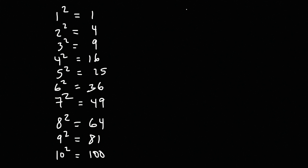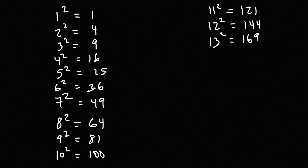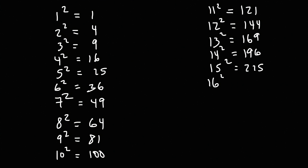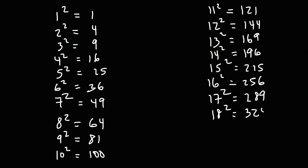Continuing: 11 squared is 121, 12 squared is 144, 13 squared is 169, 14 squared is 196. Do you see a pattern emerging? Look at the units digits. 16 squared is 256, 17 squared is 289, 19 squared is 361, and 20 squared is 400.